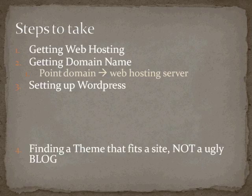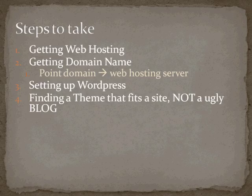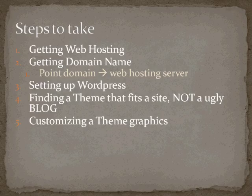Once you set up your WordPress site you can find a theme that fits a site, not an ugly blog. A theme is basically a professionally made template that you can customize fairly easily. WordPress is known for their blogging system, but over the years people realized WordPress is actually a CMS — a content management system — and you can make a very pretty website with it. Then we're going to talk about customizing a theme.